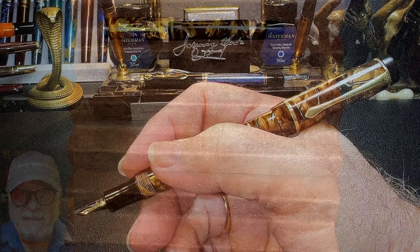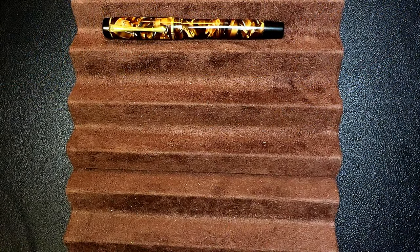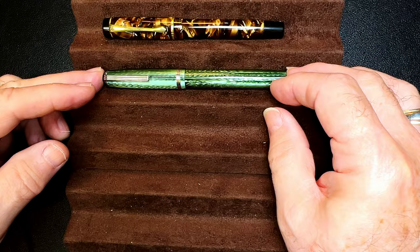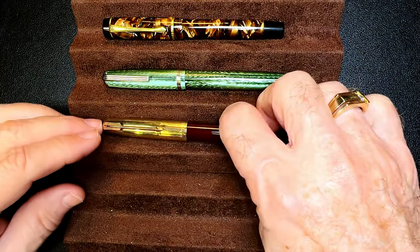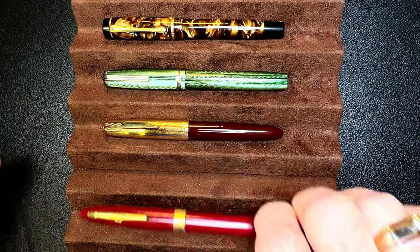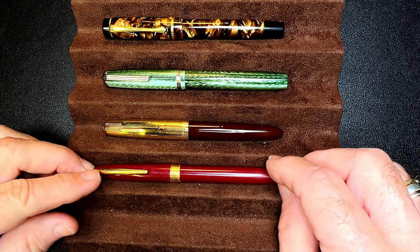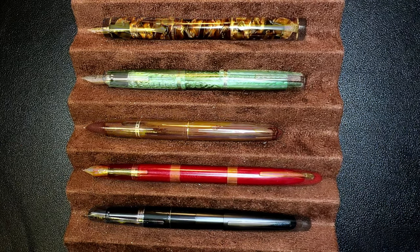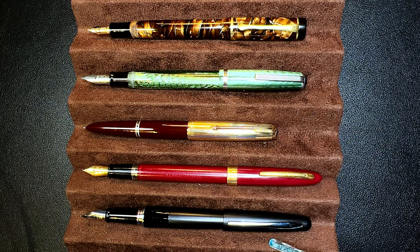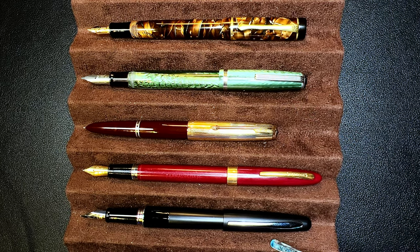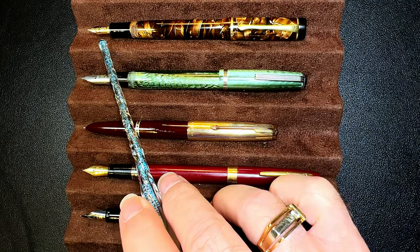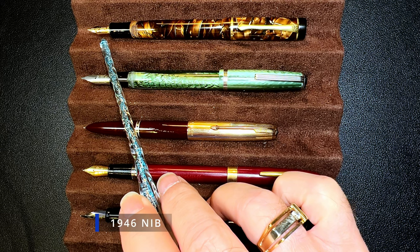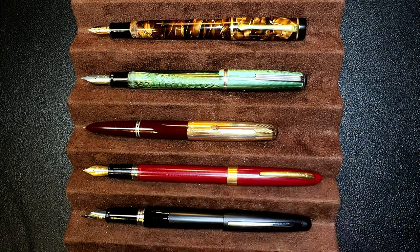The cap posts deeply and securely and it's a really nice length and balance posted. Now let's look at some size comparisons. Here's the 1940s LeGay celluloid button filler with a 1943 Esterbrook H celluloid lever filler, a 1947 Parker 51 Demi Vacumatic, a 1940s Schaefer snorkel touchdown, and a Pilot Metropolitan for scale. Now let's see them posted. And here they are posted.